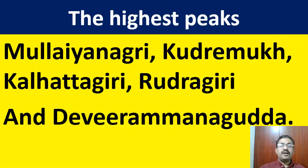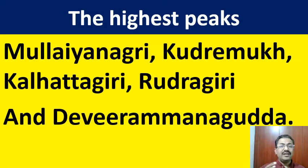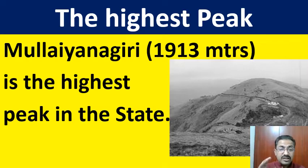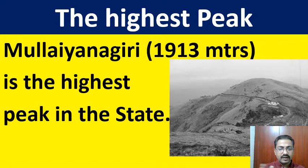In the Malnad region, there are many highest peaks, namely Mullayanagiri, Kudremukha, Kallatgiri, Rudragiri, and Devi Ramanagudda. Among these, Mullayanagiri has a height of 1913 meters from sea level and is the highest peak in our state, Karnataka. I am showing you the textbook picture here in the right side corner.